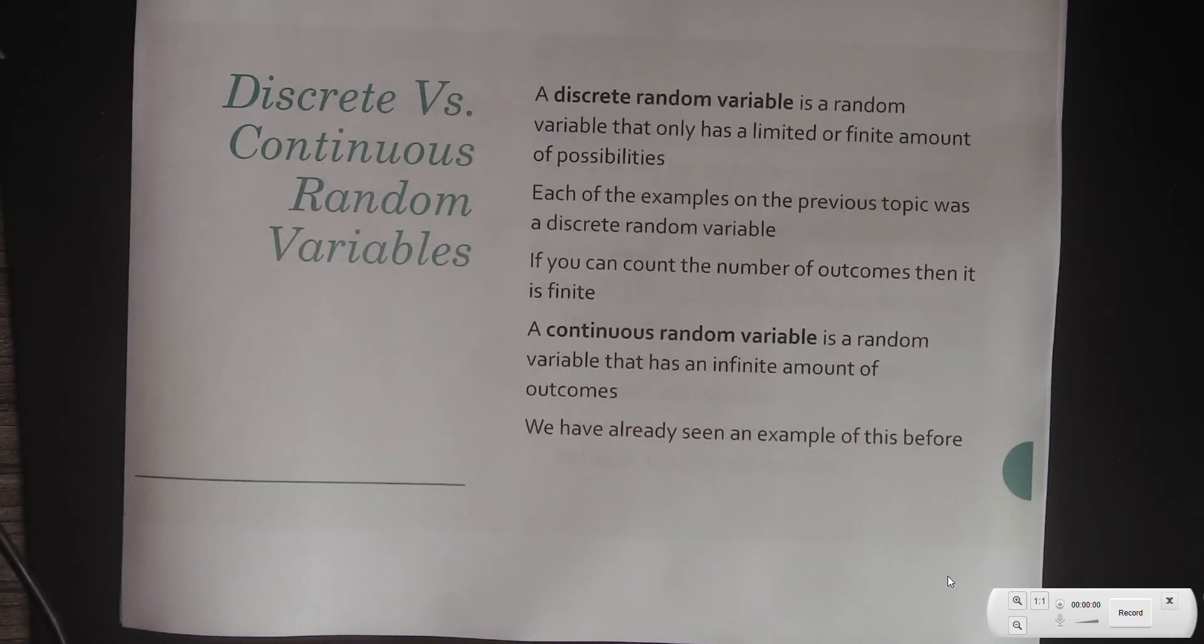Continuous random variable is a random variable that has an infinite amount of outcomes. Infinite's kind of a strong word, and you just can't really count them.